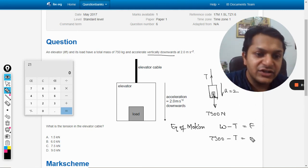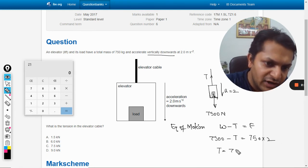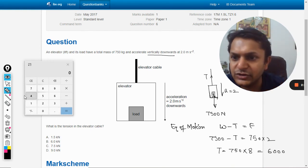Acceleration is 2, mass is 750. When you calculate it, it will come out to be 750 multiplied by 8, which is 6000 if I'm not wrong.